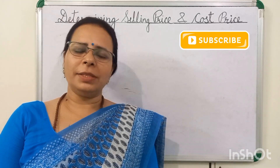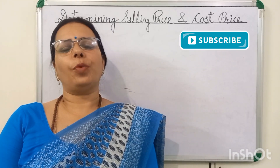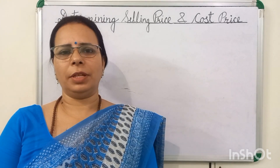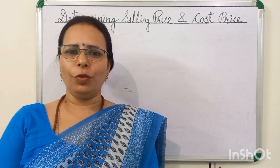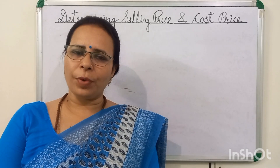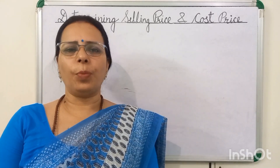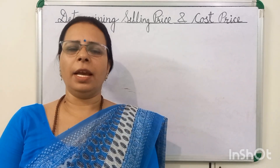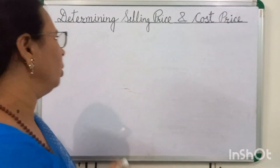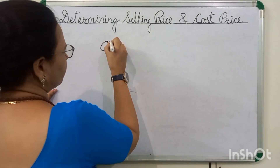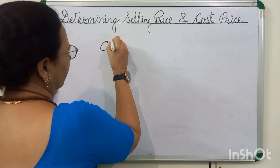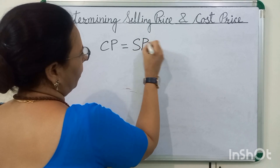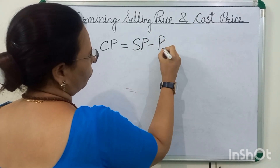selling price and profit are given and we have to find cost price. We will subtract profit from selling price. Hence, the formula of cost price is equal to SP minus profit.